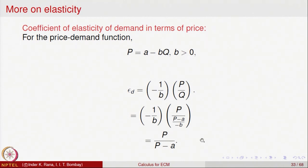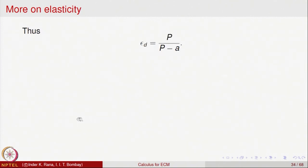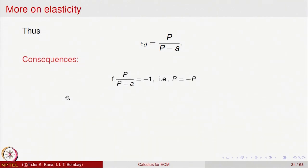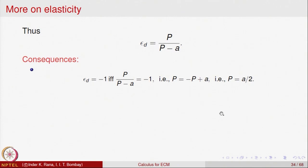Notice that the slope B is not entering into the picture at all in this formula — ε_D = P/(P − A). This is a formula for the coefficient of elasticity of demand at price P. If ε_D = −1, this happens if and only if P/(P − A) = −1, and solving that equation gives P = A/2. So if P = A/2, then the coefficient of elasticity equals minus 1, meaning there is unit elasticity at that point.